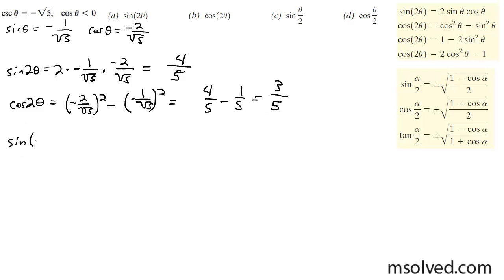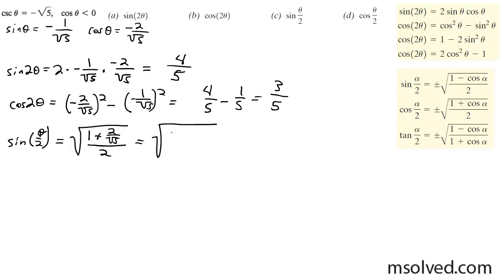Now for the half angle of sine — this is going to be a positive value. This is going to be equal to the square root of (1 minus cosine) over 2, which is the square root of (1 + 3/5) over 2. Multiplying through by the radical gives us 5 plus 2√5 over 5, divided by 2, which gives us the square root of (5 + 2√5) over 10.